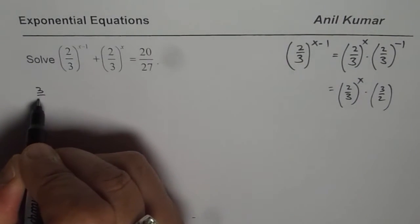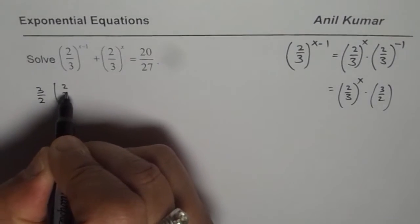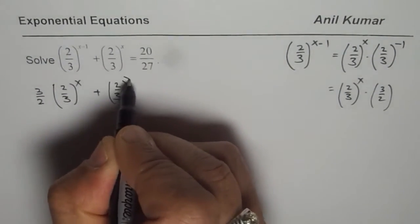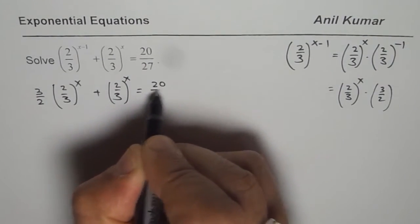So we will replace this by 3 over 2 times 2 over 3 to the power of x plus we have 2 over 3 to the power of x equals to 20 over 27.